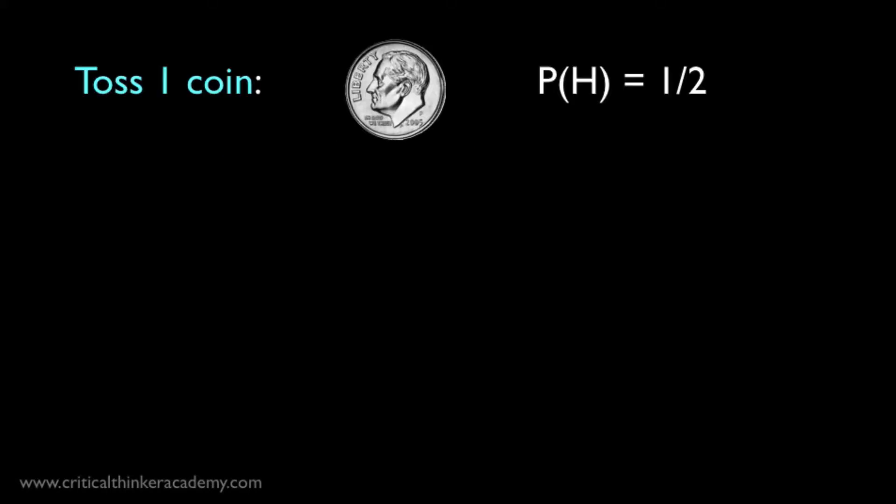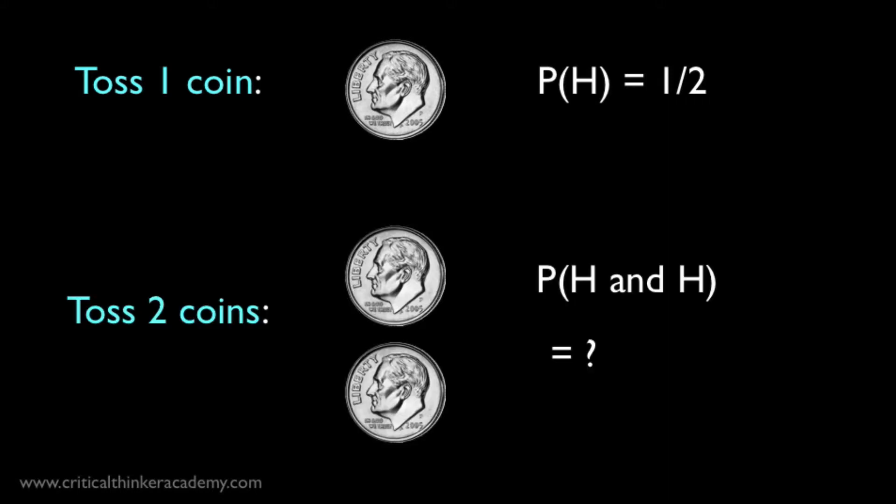Let's consider coin tosses again. The probability of a single coin landing heads is one half. Now, what if we toss two coins at the same time? What is the probability that both coins will land heads?